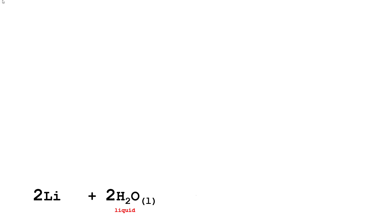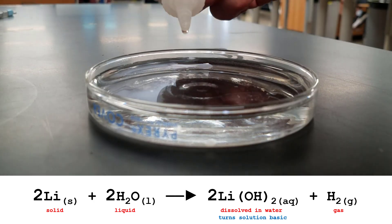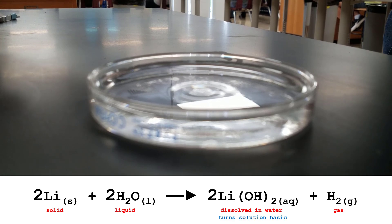Let's preview the reaction you're going to see. At the microscopic level, two molecules of water, a liquid, react with two atoms of lithium metal, a solid, to produce two lithium hydroxides. Lithium hydroxide is a salt which immediately dissolves into the water. Hydroxide ions dissolved in water make the solution basic. We put phenolphthalein in the water to indicate basic conditions with color. Also produced will be a molecule of hydrogen gas, which will also be visible to you. Now let's observe that reaction at the macroscopic level, with that microscopic reaction happening trillions and trillions of times each second.